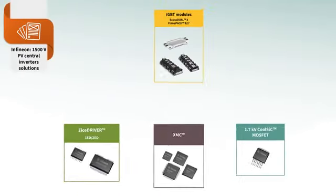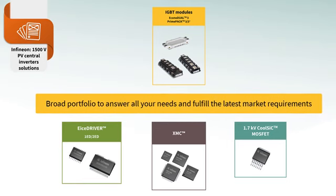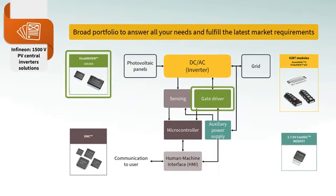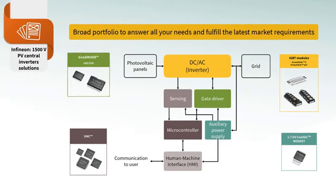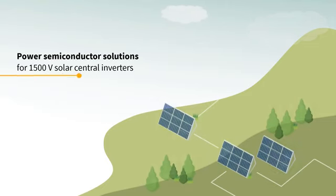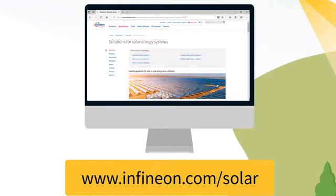If you are having difficulties in choosing different semiconductors for your solar power systems, Infineon has a broad portfolio that answers all your needs and fulfills the latest market requirements, from a few kilowatt to several megawatt power levels. Every inverter needs a switch, all switches need a driver, and all drivers need to be controlled. That's why we offer the right ICE driver gate driver and XMC microcontrollers. Finally, each functional block needs an auxiliary power supply — for that purpose, we offer 1.7 kV CoolSIC MOSFET. Hopefully, this video was interesting and provided you some hints on power semiconductor solutions for solar central inverters. If you need additional information, just have a look at our application page at Infineon.com, and don't forget to subscribe to Infineon's newsletter for engineers.